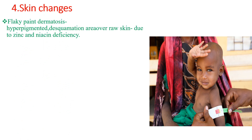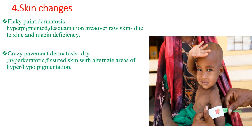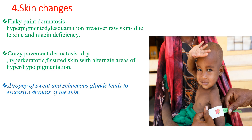When we come to skin changes, flaky paint dermatosis is common — this is a hyperpigmented desquamation area over raw skin, due to zinc and niacin deficiency and free radical damage. Crazy pavement dermatosis is a dry, hyperkeratotic, fissured skin with alternate areas of hyper- and hypo-pigmentation. Atrophy of sweat and sebaceous glands leads to excessive dryness of the skin and dry eyes. Acrodermatitis enteropathica is due to zinc deficiency from nutritional lack of zinc intake.